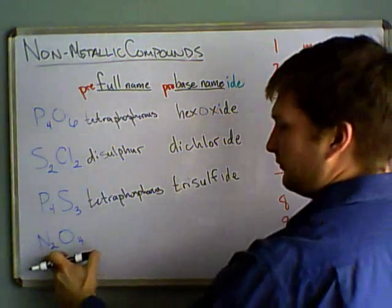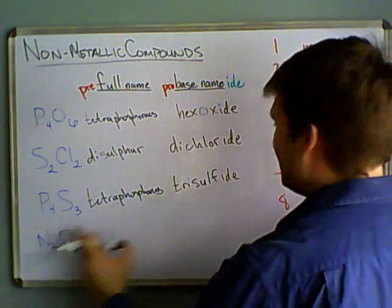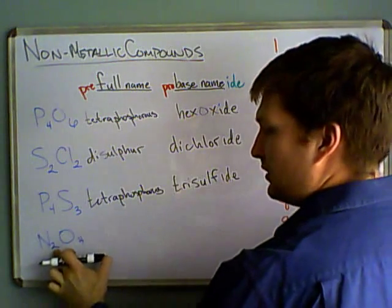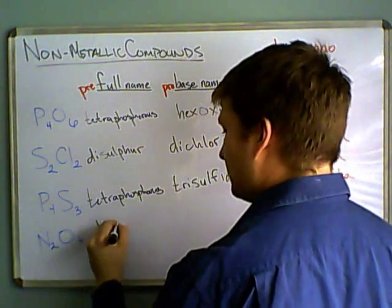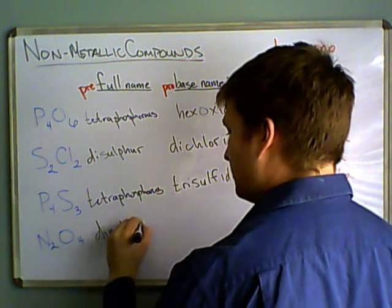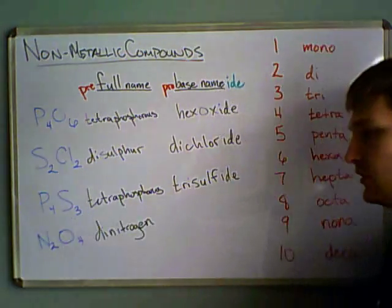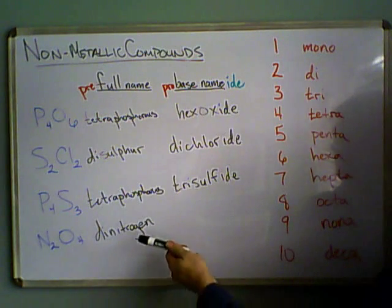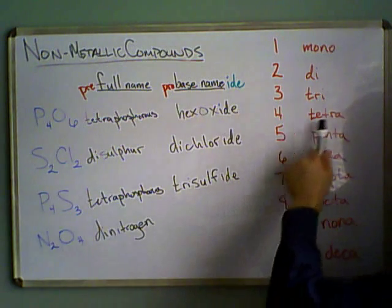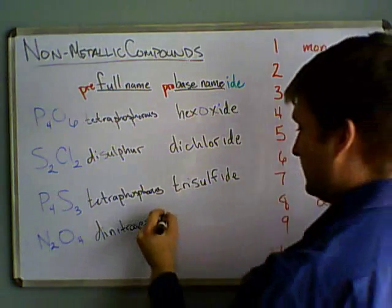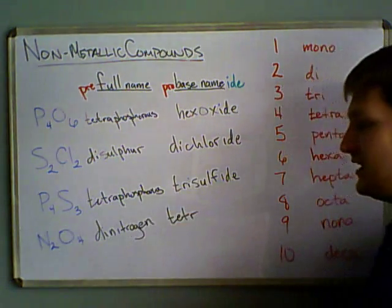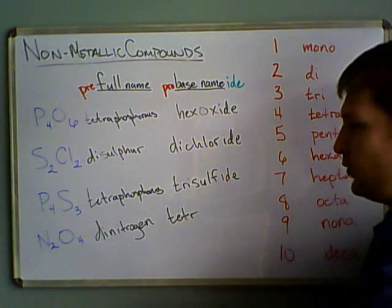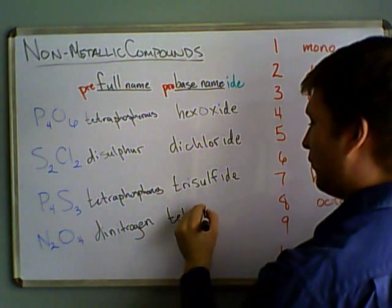Now, the final one, we have, it's going to be di, because we have two, so di, nitrogen, dinitrogen, and then we have, let's see, four tetra, but tetraoxide would sound weird, so tetroxide,